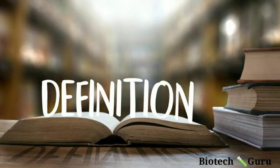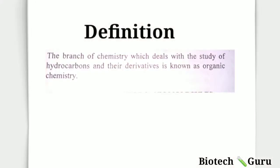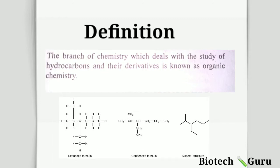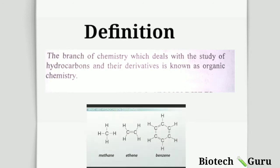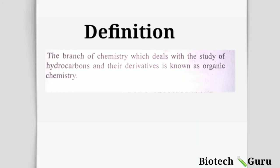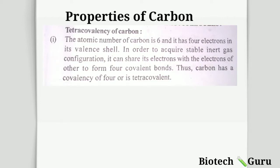Let's start with the definition. What is organic chemistry? The branch of chemistry which deals with the study of hydrocarbons and their derivatives is known as organic chemistry. It is a part of chemistry which deals with hydrocarbons — studying hydrocarbons is a core focus of this subject. Derivatives means those compounds which are derived from hydrocarbons. So it is a branch of chemistry which deals with hydrocarbons and their derivatives.